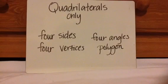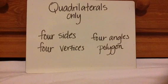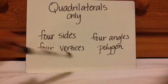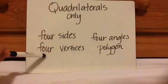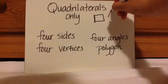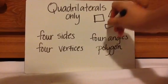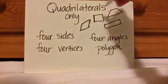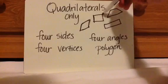For this first part, I'm only going to talk about quadrilaterals. If you don't know what a quadrilateral is, it's a polygon. A polygon is a shape that has straight sides, has vertices, no curvy lines, and no openings. A quadrilateral is a polygon that has four angles, four vertices, and four sides.